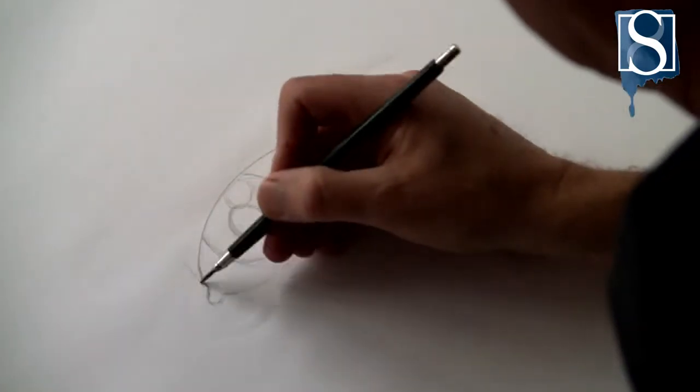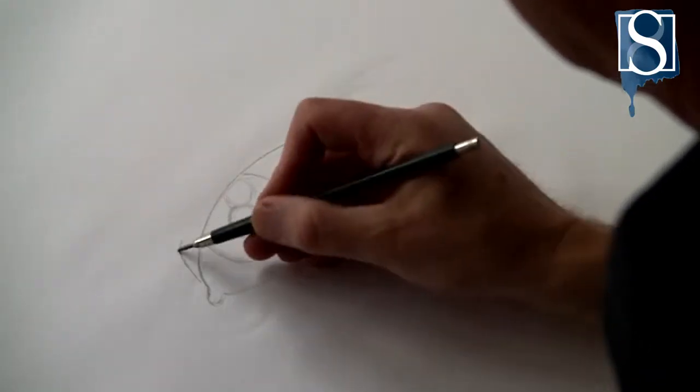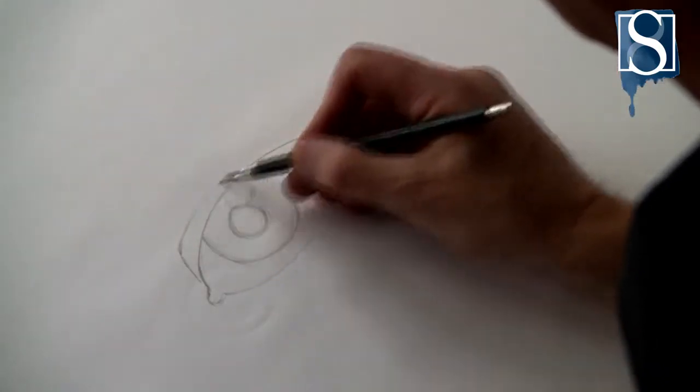As the light is coming from the right hand side, my highlight has to be on the same side. Now draw in the top eyelid.